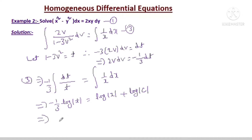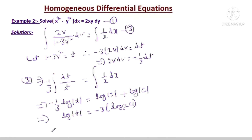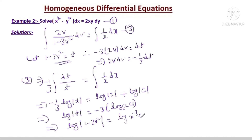Taking -3 across to the right side and using log m + log n = log mn: log|t| = -3 log|xc| = log|xc|⁻³. Substituting back t = 1 - 3v²: log|1 - 3v²| = log|xc|⁻³. This implies 1 - 3v² = x⁻³ · c⁻³.